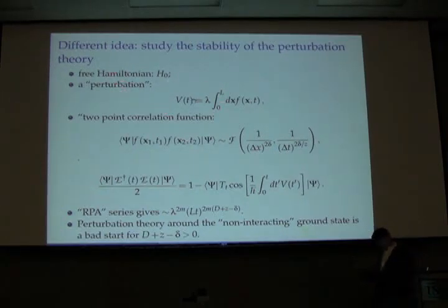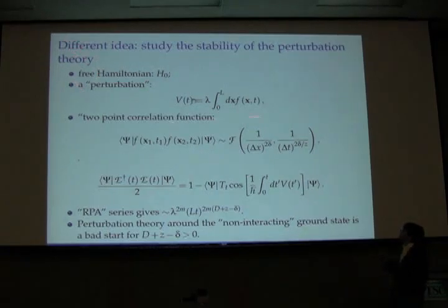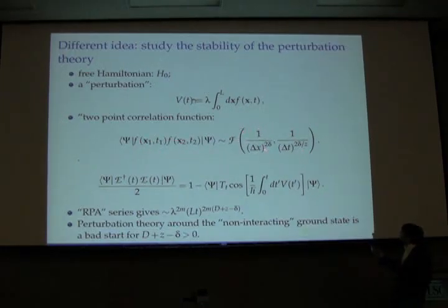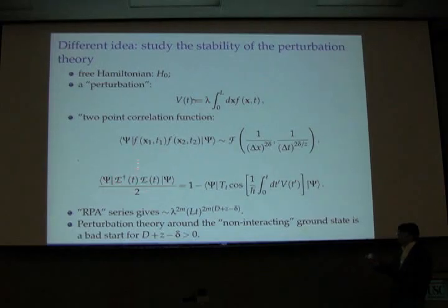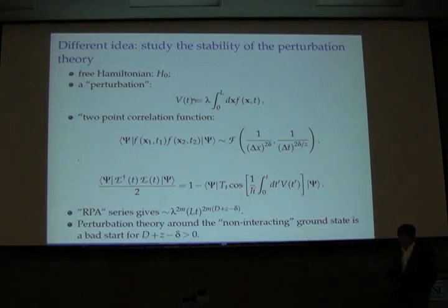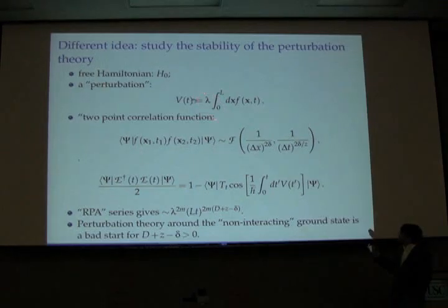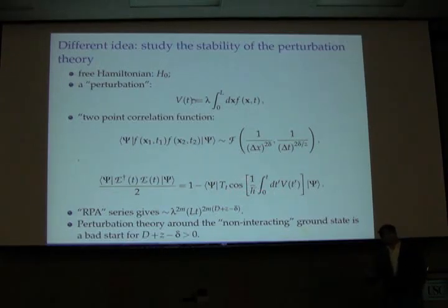Before we go to error correction, let me give a different prescription. You assume a free Hamiltonian for the environment and a perturbation of a general form. If you take the ground state of your environment, assume a very general form for the two-point correlation function, and apply these ideas to the norm — instead of using the largest eigenvalue of the Hamiltonian, use the ground state — then this is just one minus the time-ordered cosine for the interacting Hamiltonian. The question is how to look at the perturbation theory expansion of this parameter at lambda.